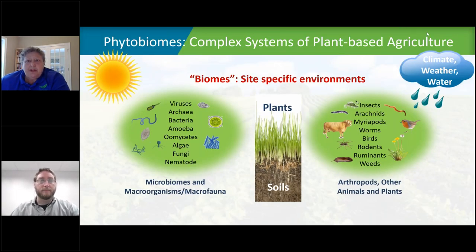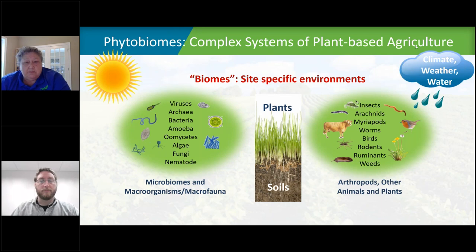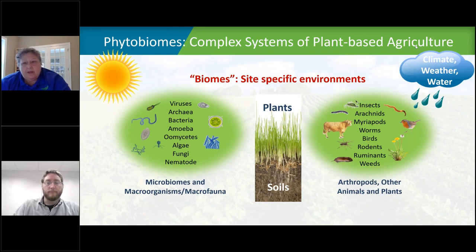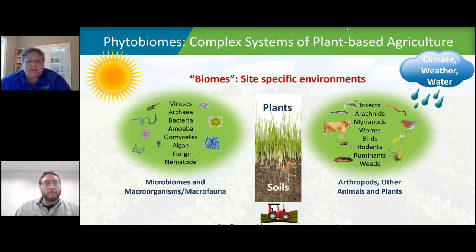There's been a lot of confusion about what a phytobiome is. In essence, it's a complex system of plant-based agriculture where a biome is a site-specific environment, plants are in that biome, and the components that come together include microbiomes, macro-organisms, macro-fauna, other animals and plants, the weather and climate, as well as the soils — all heavily influenced by management practices.